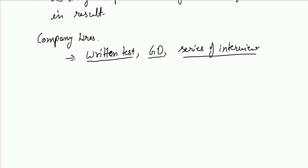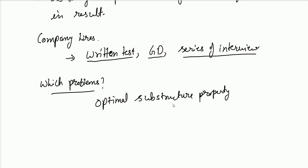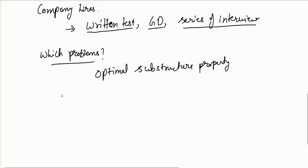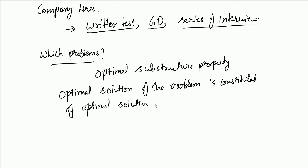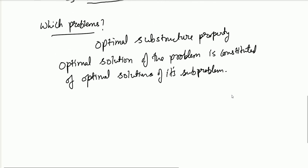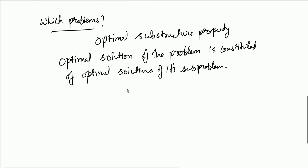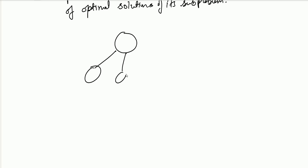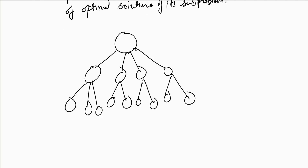Not every problem can be solved using the greedy approach. Only problems that have the optimal substructure property can be solved this way. Optimal substructure means the optimal solution of the problem is constituted of optimal solutions of its sub-problems. At every stage we are choosing greedily what is the best approach right now, so the whole solution should be constituted of the optimal solutions of those sub-problems.